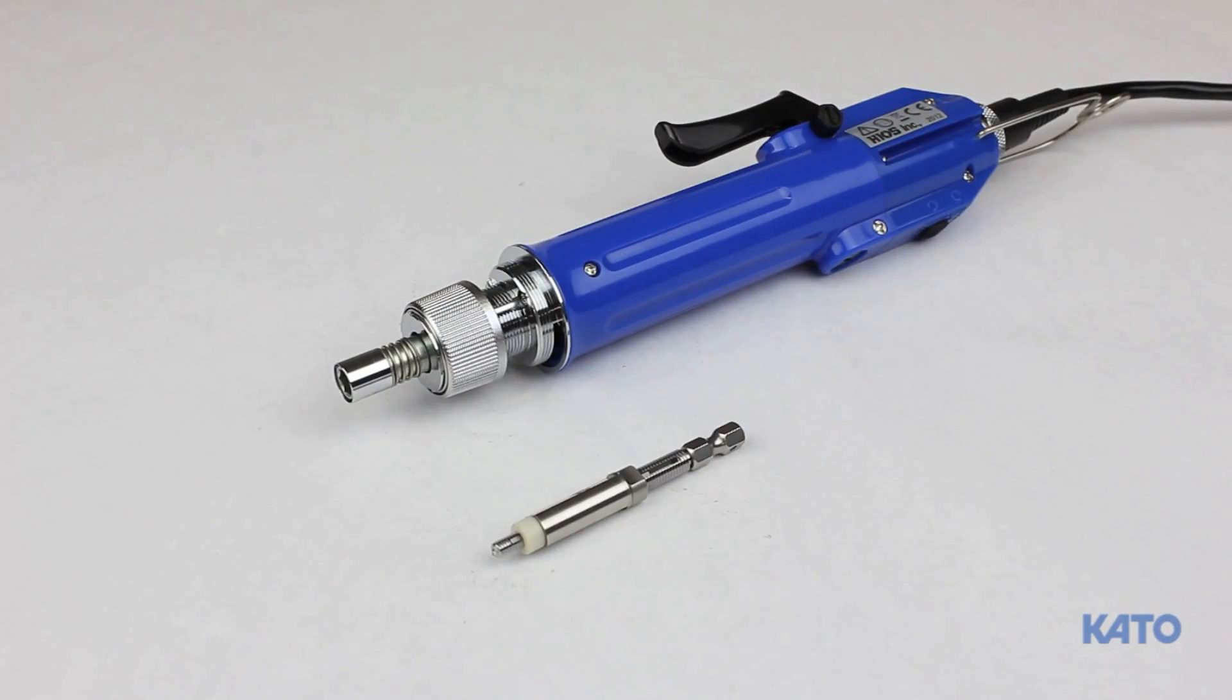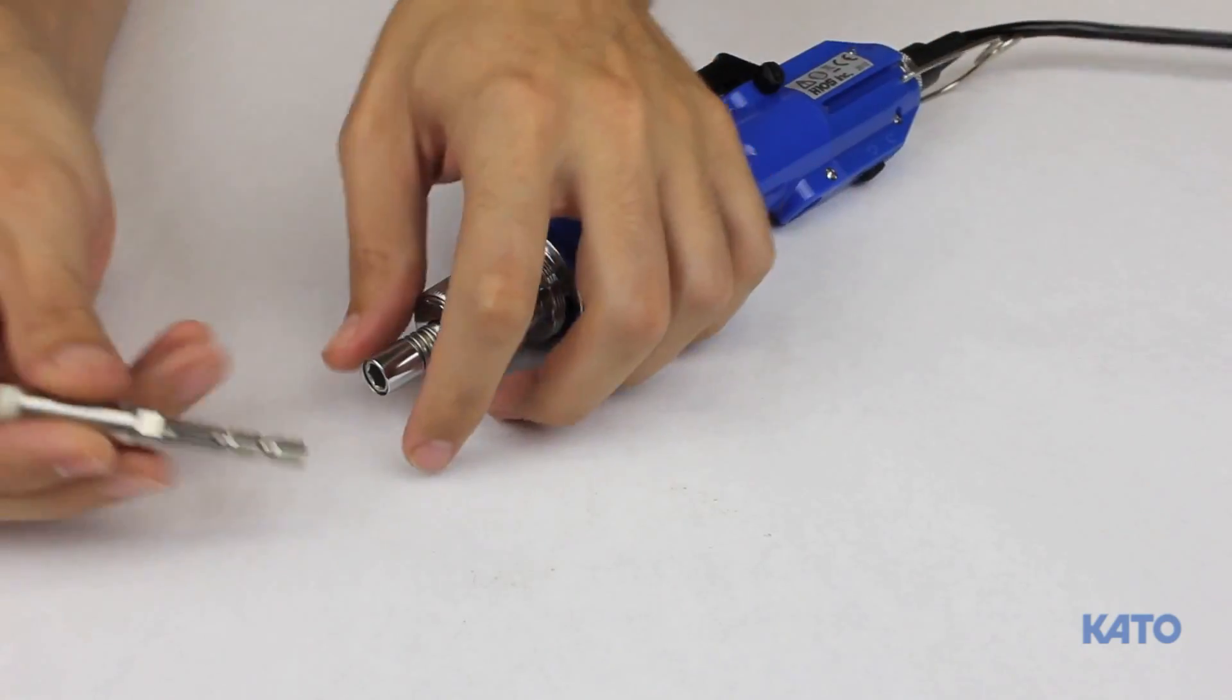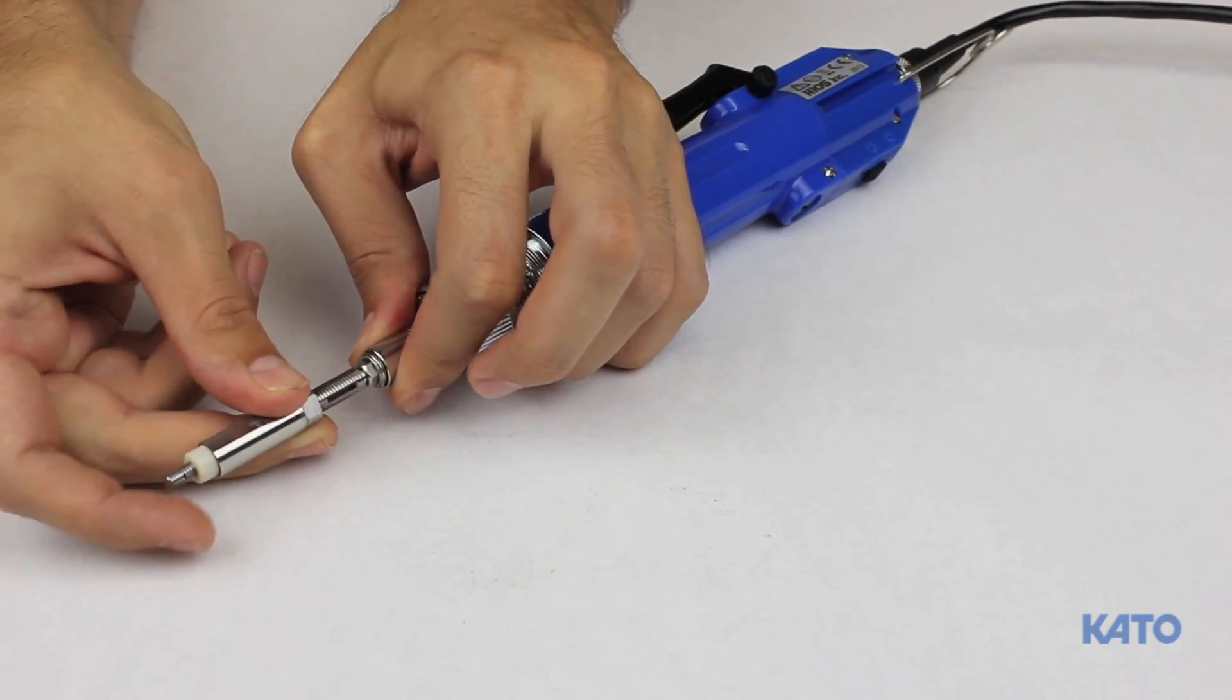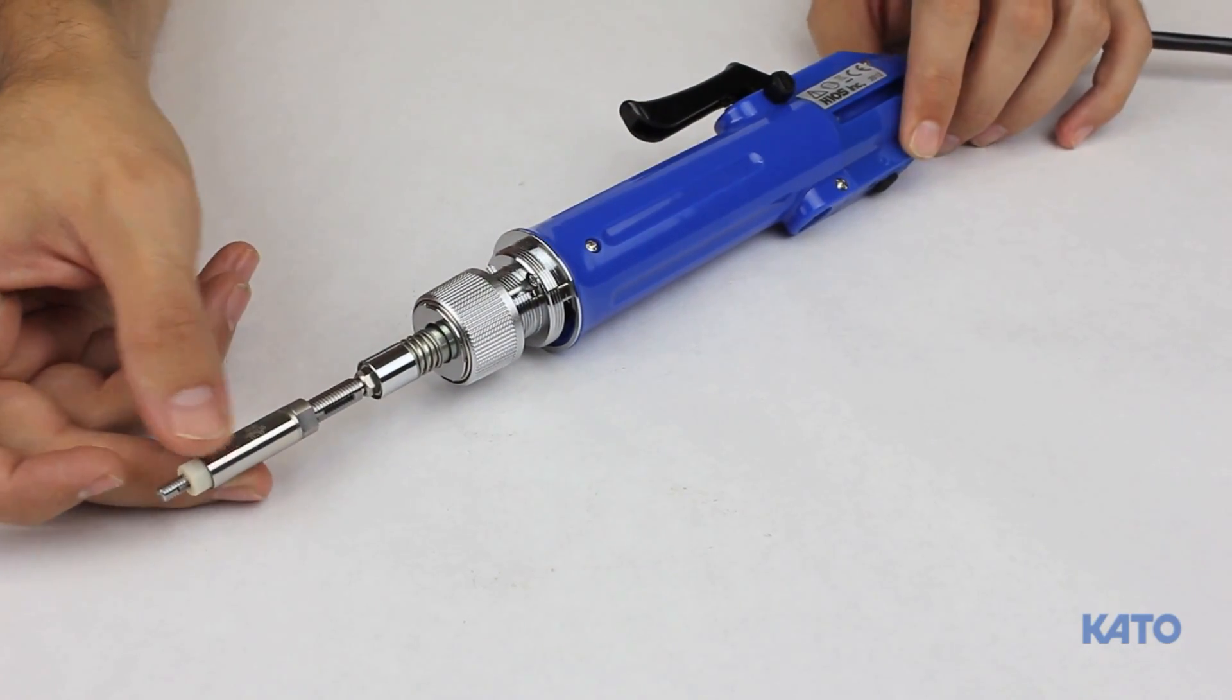At the tip of the tool you will find the quick disconnect sleeve. To insert the mandrel, pull back on the sleeve, slide the hex shaped mandrel into the slot, and release the sleeve. This will lock the mandrel in place.